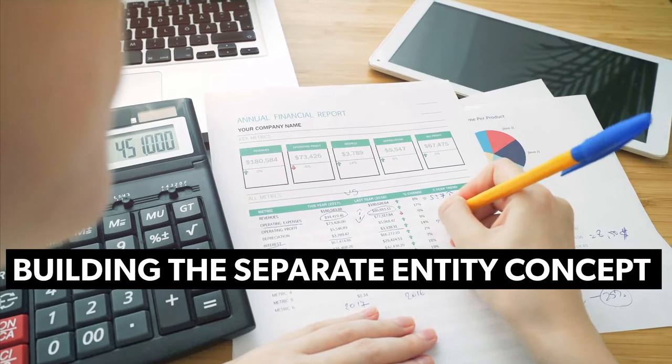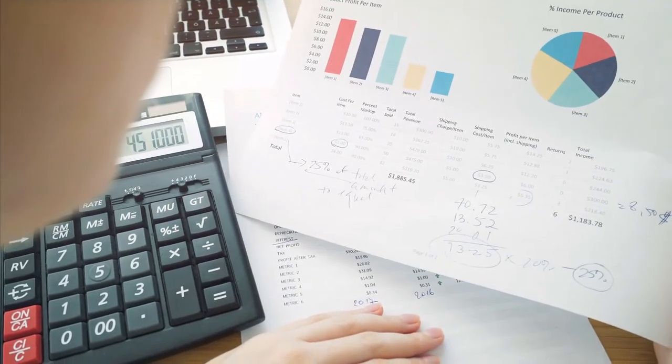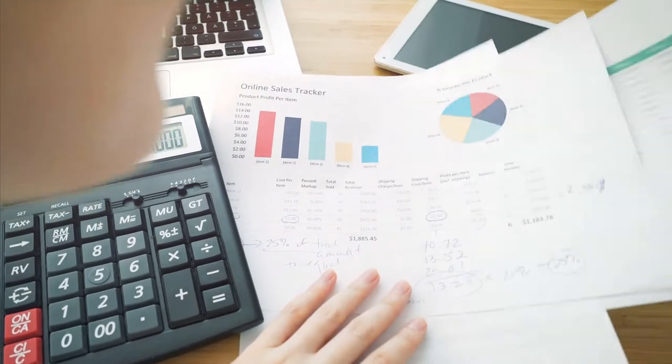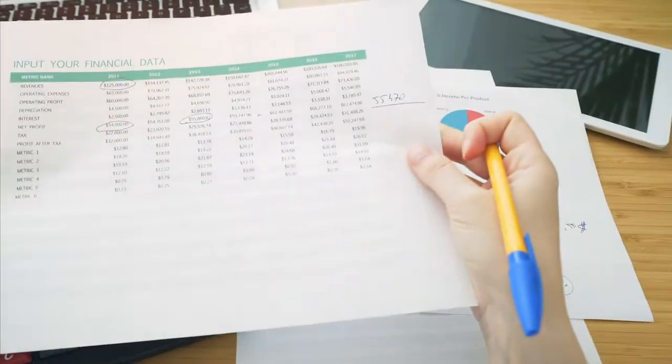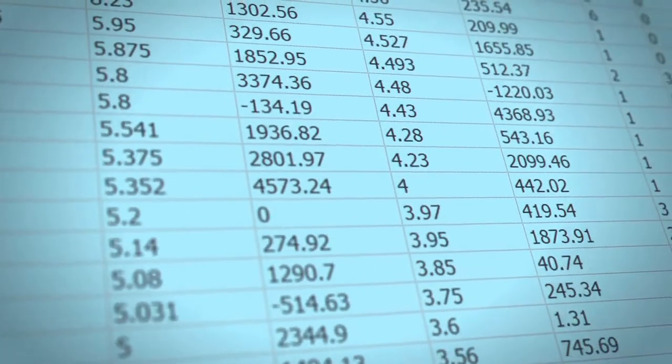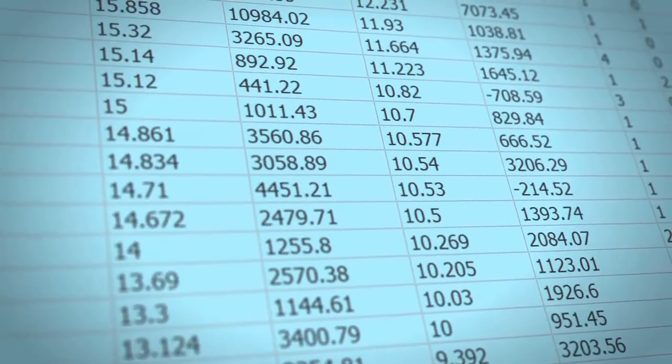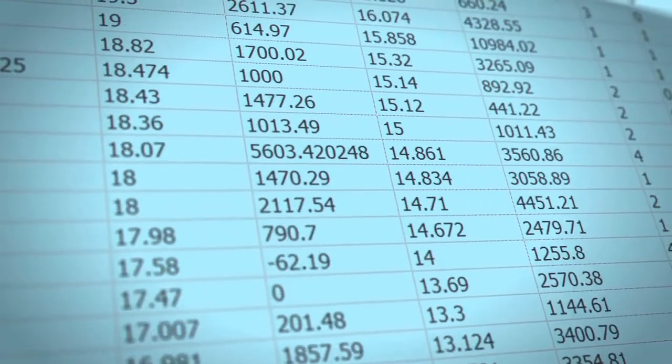Tip number one, building the separate entity concept. This is the way of organizing your business where it operates as a separate entity from you and could be sold off in its own right. This can make it easier for someone to buy into your company or part with shares if they wanted to. It also means that when calculating profits, any losses made by one branch do not affect another so there is some room for maneuver.